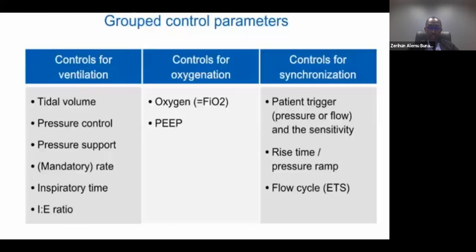For oxygenation you have two tools. First, FiO2 — the ventilator mixes air and pure oxygen to increase oxygen concentration. Second, PEEP — it increases the alveolar interface by stretching alveoli open so there is more surface area for gas exchange. If you have an oxygenation problem, those are the two tools you use.